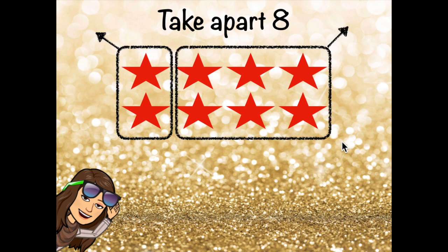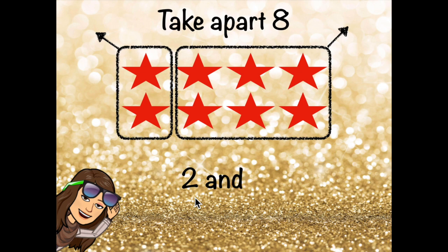I took them apart by drawing a circle around some of the stars and drawing another circle around the rest. Then the arrows represent that they're being taken apart from each other. When you take apart a number, you separate it into its parts. How many stars are in this group? There are two stars. How many stars are in this group? There are six stars. Are there still eight stars in all? Yes, you're right. So I could represent this separation by saying two and six.